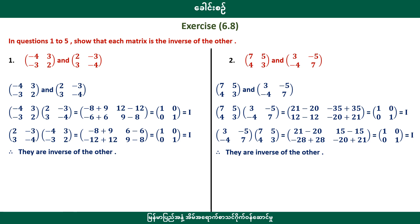Now, the numbers are minus 4, 3, minus 3, 2 which equals beta. This will give us 2 minus 3, 3 minus 4, equal to beta. This will give us the matrix of the state.